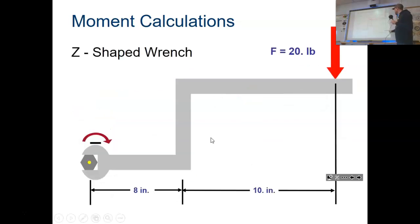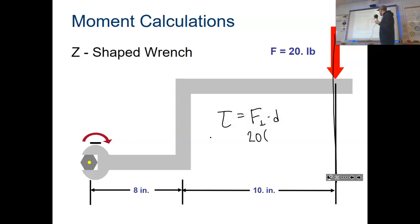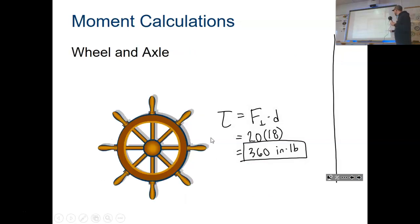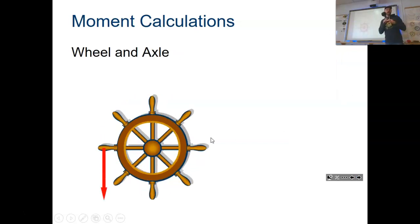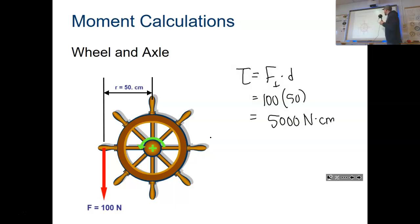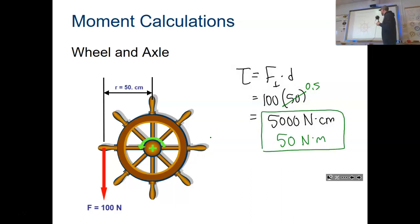Here's a slightly more complex one. The force is still perpendicular, so we use 20 pounds, but now the total distance is 18 inches — so the torque is 20 × 18 = 360 inch-pounds. For a wheel and axle, it's the same idea: pushing at 100 newtons with a distance of 50 centimeters gives 100 × 50 = 5,000 newton-centimeters. Converting 50 cm to 0.5 meters gives 50 newton-meters. Either form is acceptable.